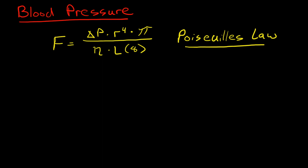The best way to understand this is to have a basic understanding of Poisson's law. I don't want you to get intimidated by this formula — we're going to break it down and make it very simple. This is the formula that is Poisson's law. F stands for flow, and in this example we're going to be talking specifically about blood flow.